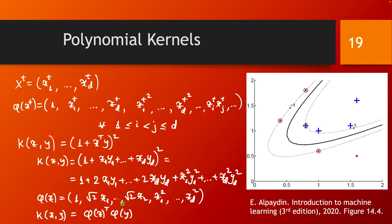We can see this because when we take this dot product between phi of x and phi of y, 1 times 1 gives us 1, then square root of 2 times x1 times square root of 2 times y1 gives us 2x1y1, and similarly for xd. Then we have x1 squared times y1 squared, and xd squared times yd squared gives us this term.